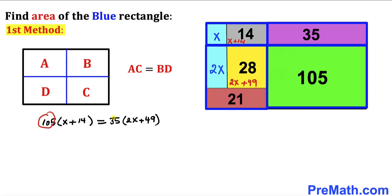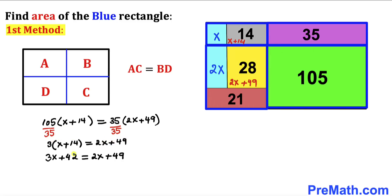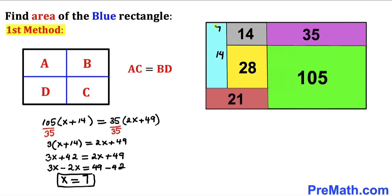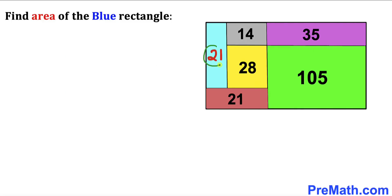We can see that 105 and 35 are both divisible by 35, so dividing both sides by 35 gives 3(X + 14) equals 2X + 49. Distributing the left side: 3X + 42 equals 2X + 49. Moving 42 to the right and 2X to the left: 3X minus 2X equals 49 minus 42, so X equals 7. This value is 7 and 2X is 14. The total area is 7 plus 14, which is 21 square units.